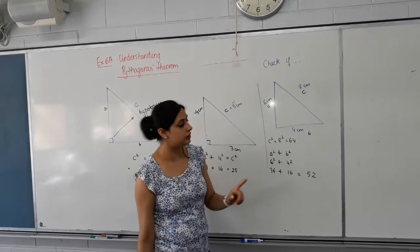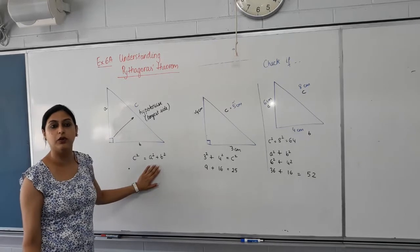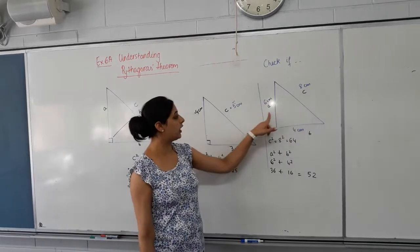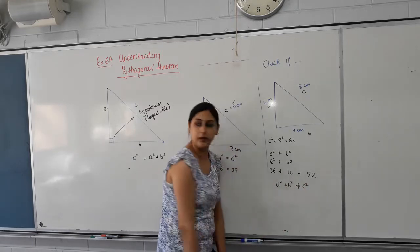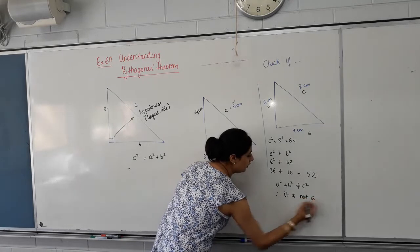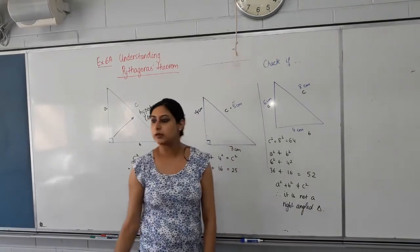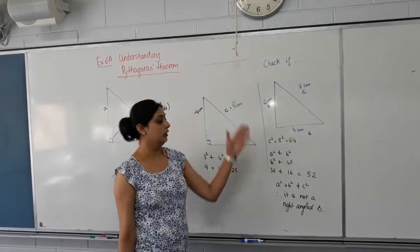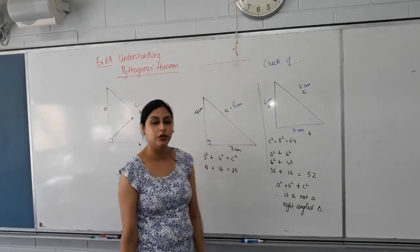Because in every right-angled triangle, the Pythagoras' theorem must be true. Hypotenuse squared should be equal to the sum of squares of the other two sides. In simple words, C squared must equal A squared plus B squared. So how will you write it? You'll say A squared plus B squared is not equal to C squared. Therefore, it is not a right-angled triangle. Does that make sense? That's 6a, understanding. So you'll be asked to check whether the three sides belong to a right-angled triangle or not. If it's equal, yes it is. If it's not equal, no it isn't.